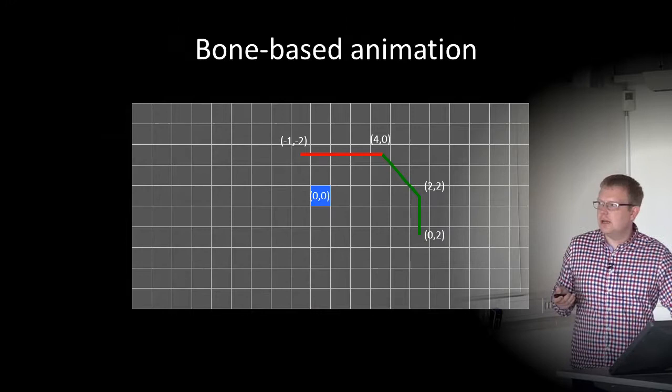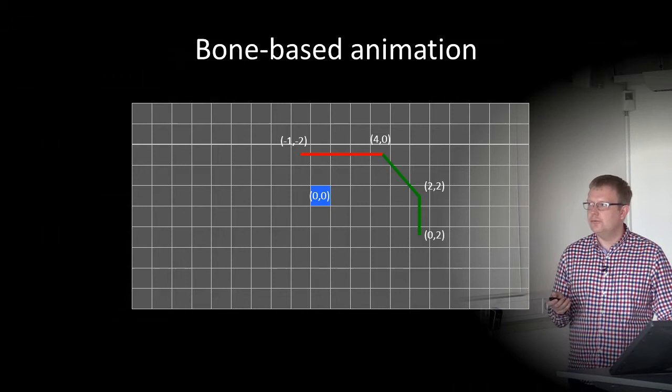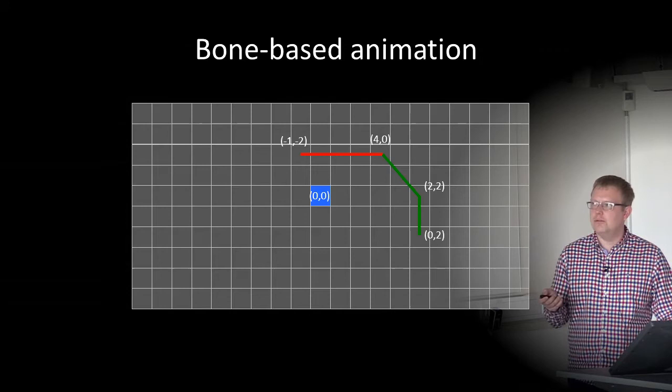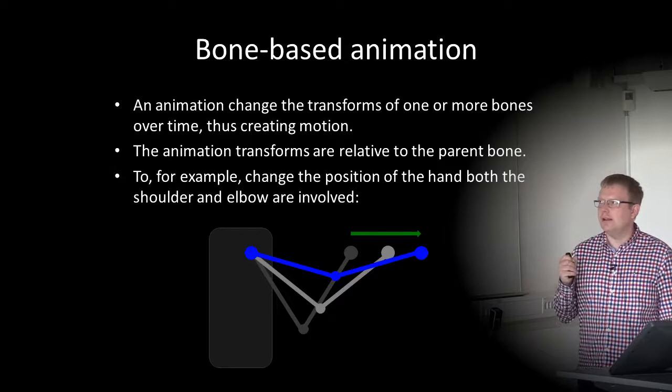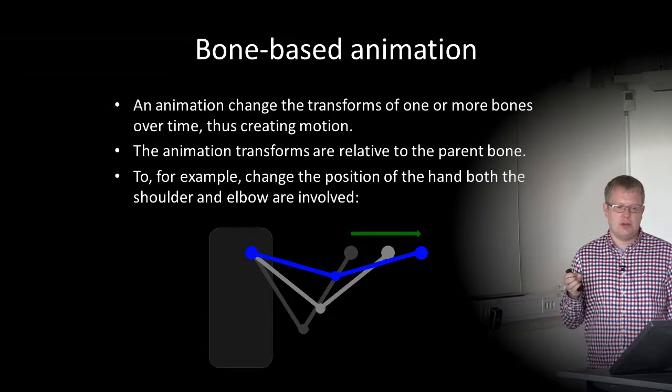The relative position of zero, zero is the center of a game object. Minus one and minus two for a bone means minus one in x and minus two in y. All positions are relative to the parent bone of each child bone, and the root bone is relative to the local object space of the game object. An animation changes the transform of one or more bones over time, thus creating motion. The animation transforms are relative to the parent bone.